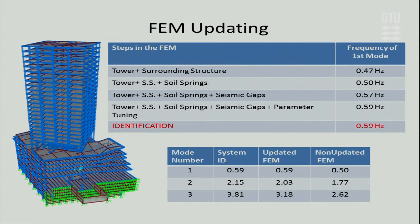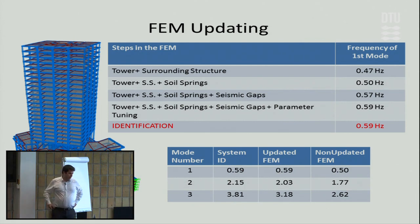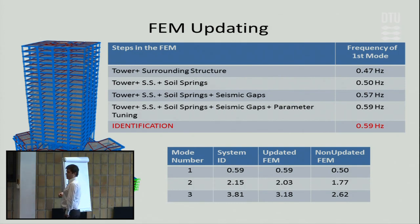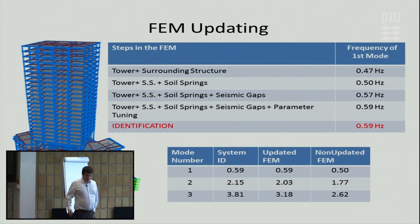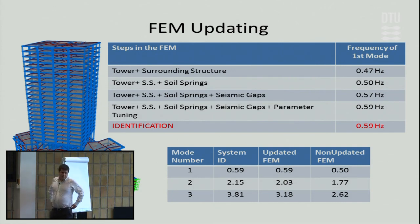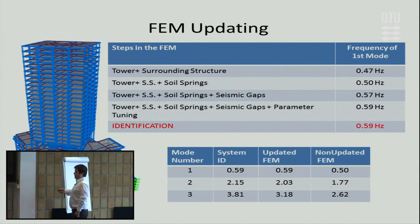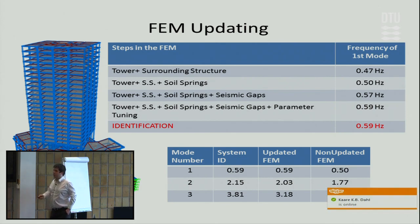Here you can see the updating parameters. We started from a basic model, but we always need to consider engineering judgment. For example, if you just update the material properties, that is not enough — you also need to consider soil springs and the surrounding structure. Modeling just the tower and updating material properties will lead to incorrect results. After applying engineering judgment, we do calibration and fine-tuning, and the updated model is quite close to the identification results.